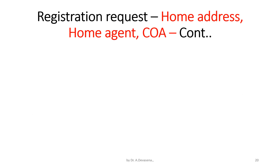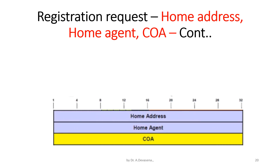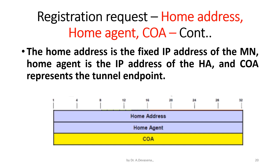The home address, home agent, and COA fields in the registration request: the home address is the fixed IP address of the mobile node (MN), home agent is the IP address of the HA, and COA represents the tunnel endpoint.